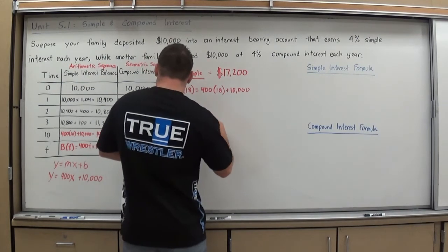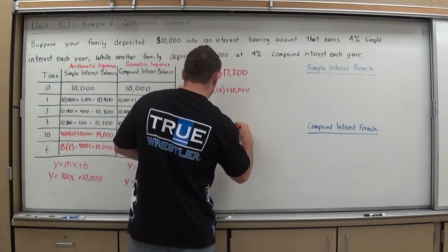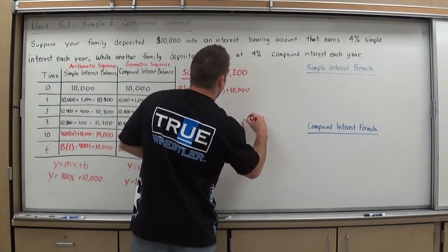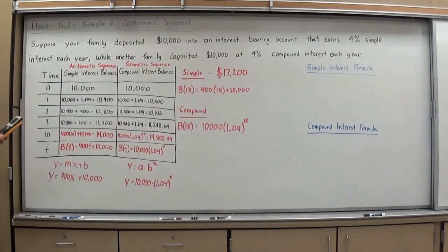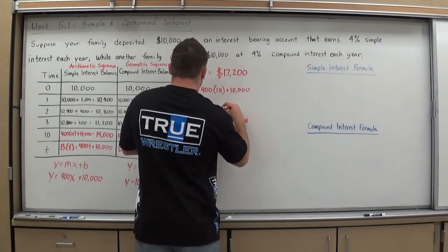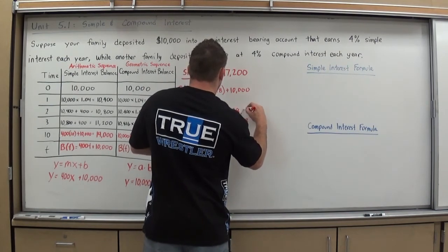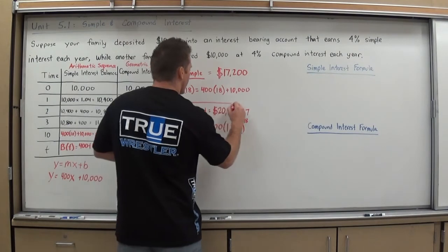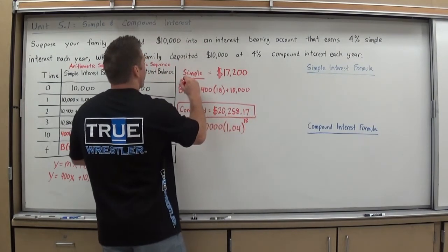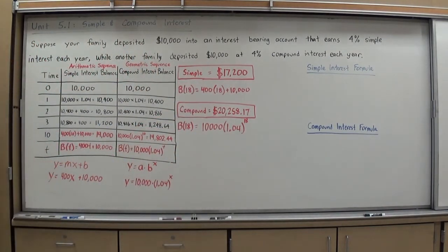Balance of 18. Our balance when T is 18 equals 10,000 parentheses 1.04 to the 18th power. Again, I'm going to type it in. 10,000 parentheses 1.04 to the 18th power. Same way I did before. And I have a compound balance of $20,258.17 at 18 years. So the friend here in this situation is going to have a little bit more money at 18 years.